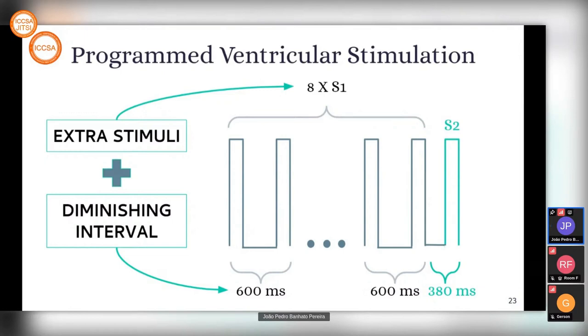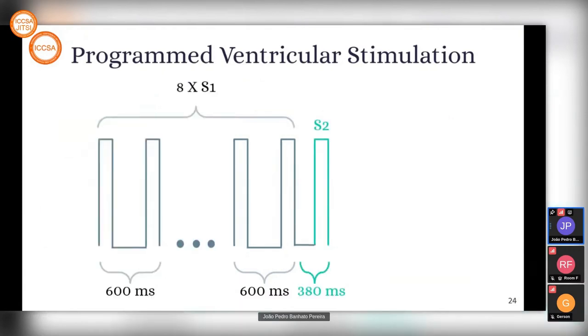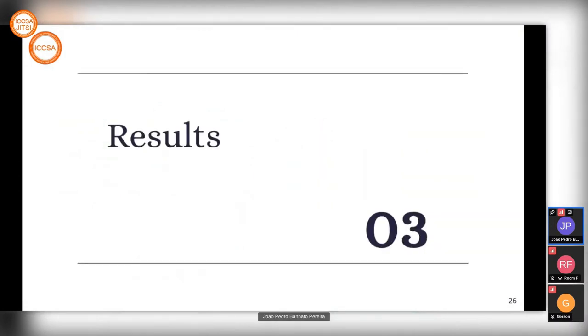Our protocol follows this rule: we always start with eight S1 applications with a 600 millisecond interval between them. All stimuli after that, the S2, S3, and so on, follow the same pattern starting with a 380 millisecond interval. Then we analyze three possible outcomes: normal, block, or arrhythmia.